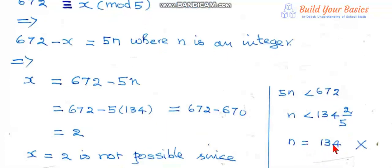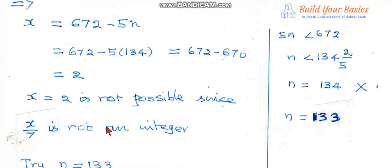So n must be equal to 134 or n equal to 133 and so on. Let us check. If n equal to 134, x equal to 2. x equal to 2 is not possible since x by 7 is not an integer. When we put x equal to 2, x by 7 is a fraction, so x equal to 2 is inadmissible.